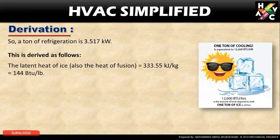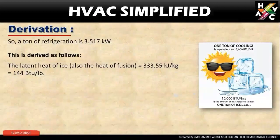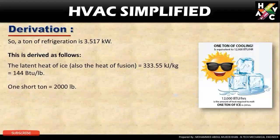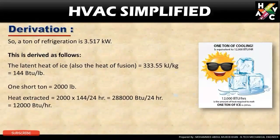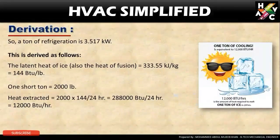Derivation: The heat of fusion is 333.55 kilojoules per kg, which equals 144 BTU per lb. One short ton is equal to 2,000 lbs. Heat extracted is equal to 2,000 into 144 BTU per 24 hours, which is equal to 288,000 BTU per 24 hours, which is equal to 12,000 BTU per hour.